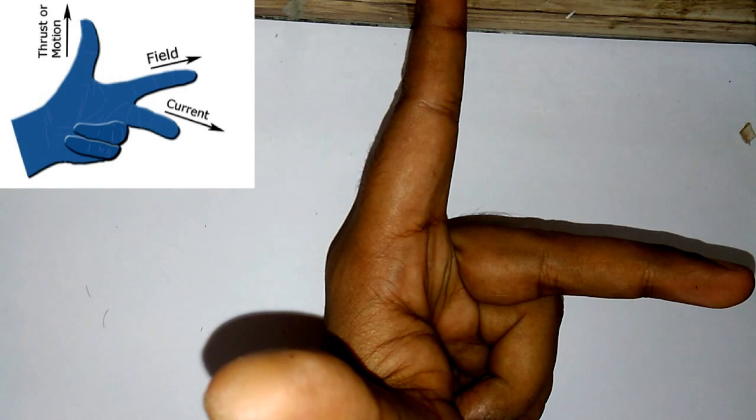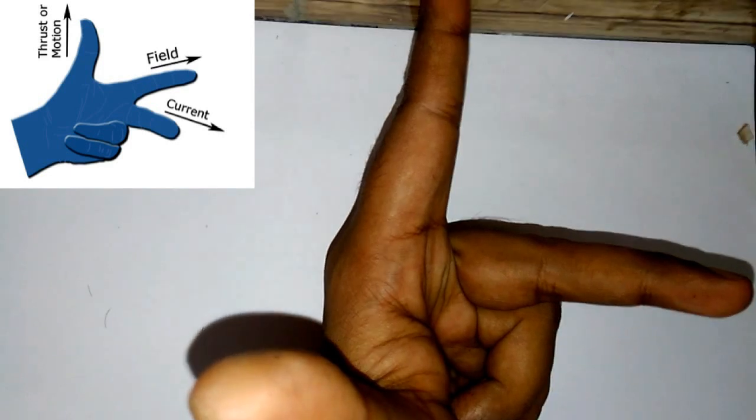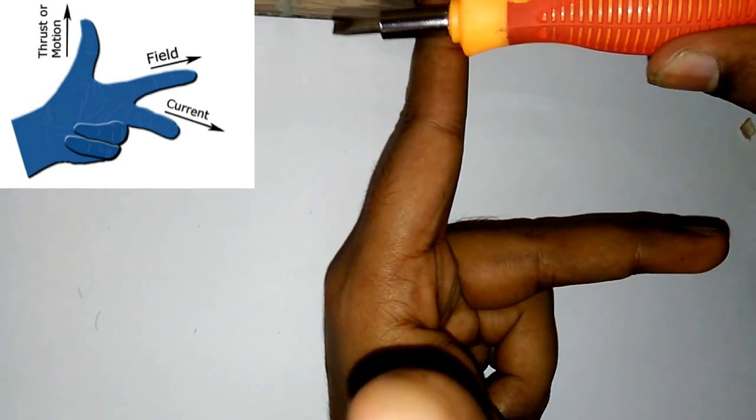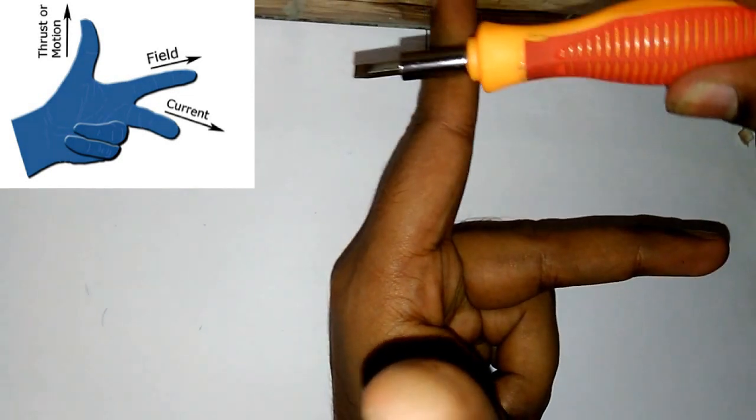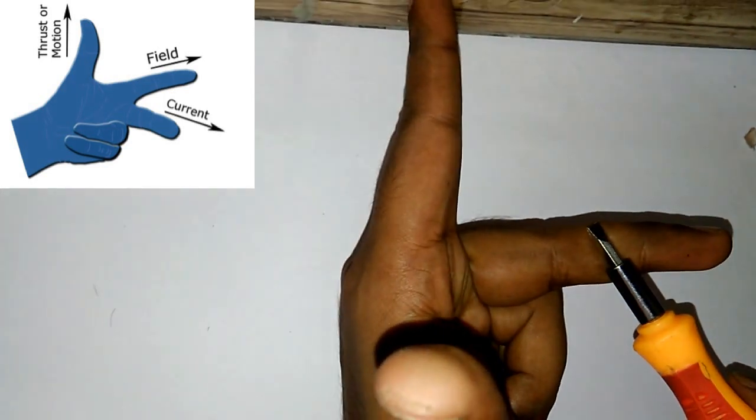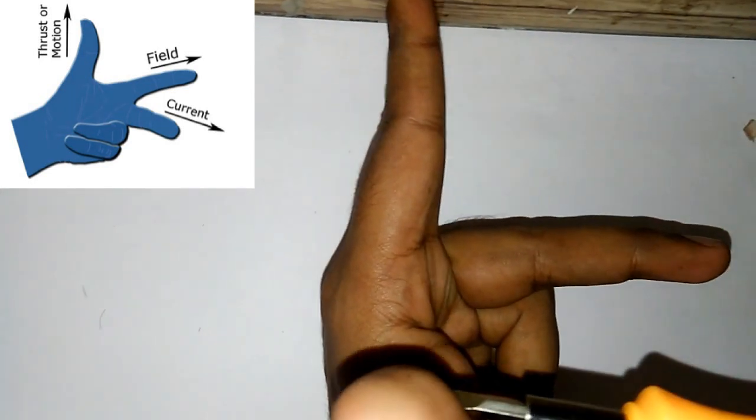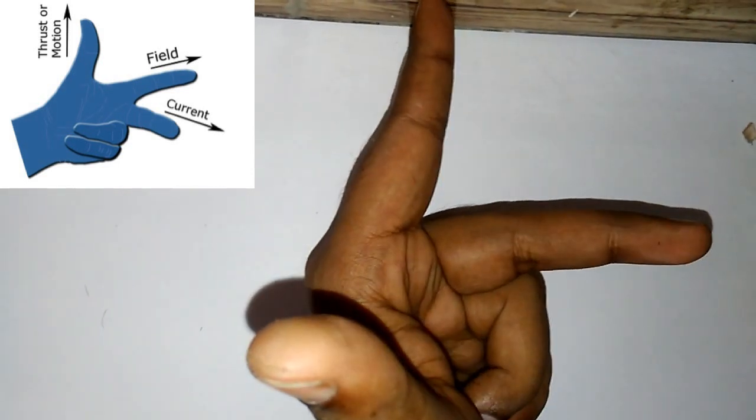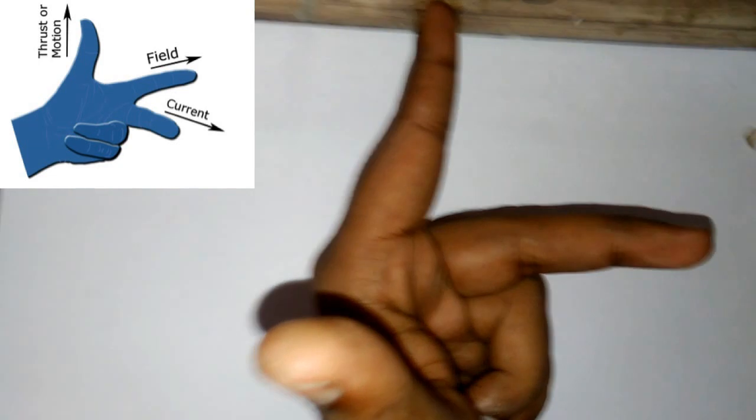Stretch your thumb, index finger, and middle finger this way, such that they are perpendicular to each other. If the index finger is pointing towards the direction of the magnetic field, the middle finger is pointing towards the direction of current, then the thumb will point to the direction of motion of the carrier - that is, the direction in which the force is applied.